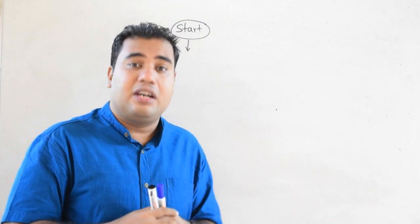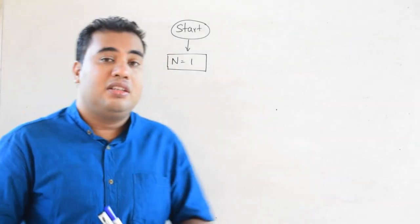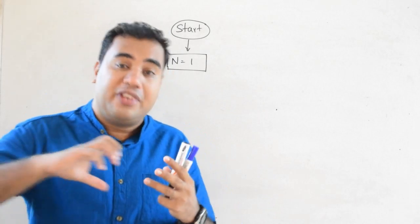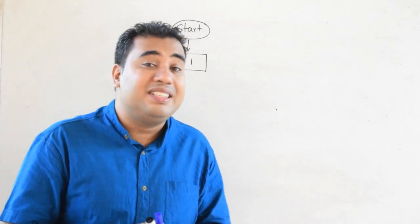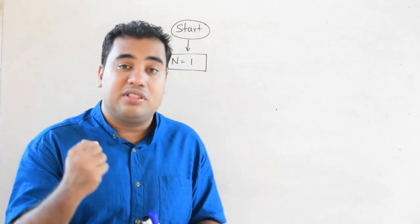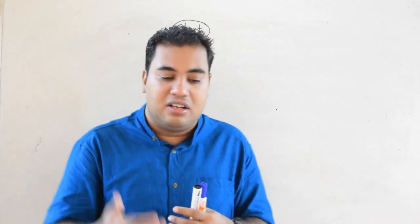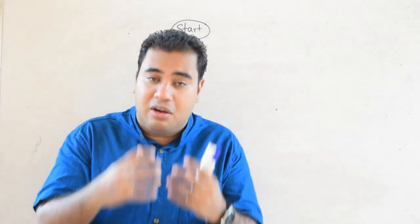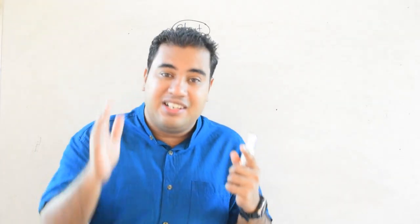The first step should initiate a value — it should begin from number 1. We take a variable n. To set a value we use the process symbol, because it happens within the system — we are not getting input or displaying output. So we use the process symbol to set n to 1. Then displaying and incrementing happen repeatedly, so those come within the repetition part, after the decision symbol.